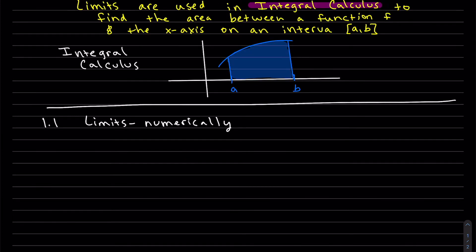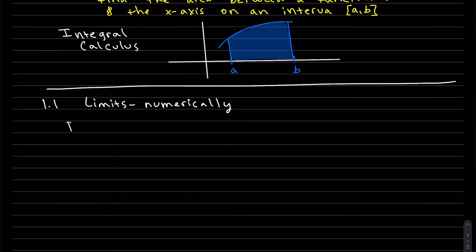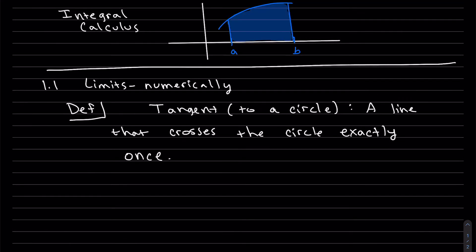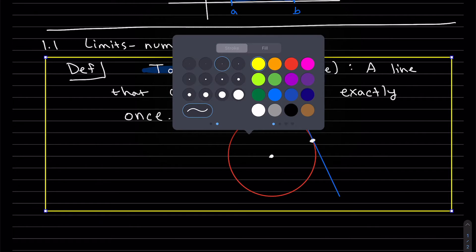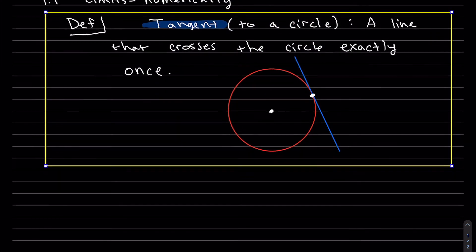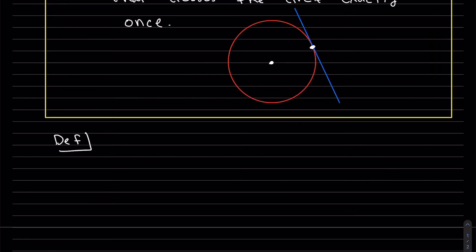To get started today, we're going to be doing limits numerically. We'll start by defining a tangent line, but first let's talk about a tangent line to a circle. The definition of a tangent line to a circle is a line that crosses a circle exactly one time. The definition of a secant line to a circle is a line that intersects a circle twice.